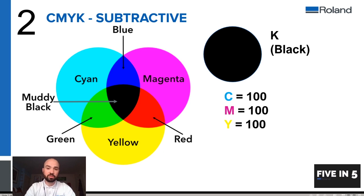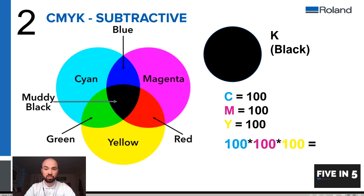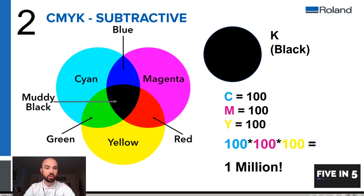The cyan, magenta, and yellow channels each go from zero to 100%. So the combination of these colors means that if we multiply 100 by 100 by 100, we have the possibility of around 1 million colors in the CMYK color mode, depending on the device that is creating these colors. CMYK is a subtractive color mode because we're reducing the amount of light that would otherwise be reflected off a white substrate. Black means that there is no light reflected.